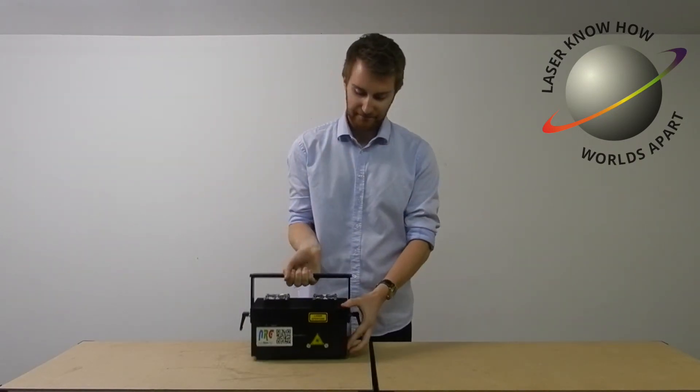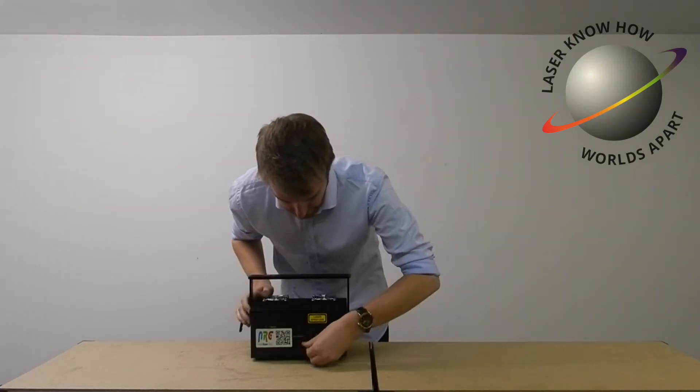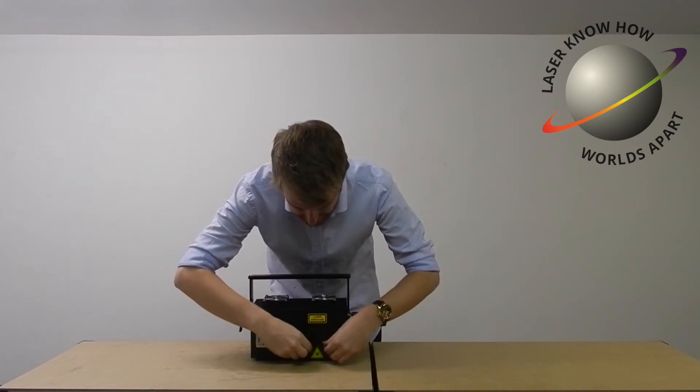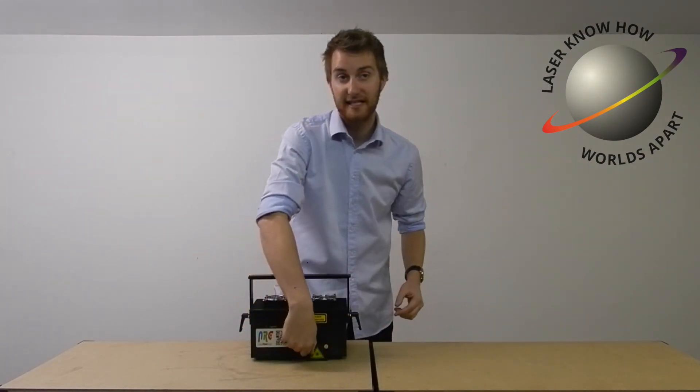So just spinning it around to the front, you've got your laser aperture protector down the front, and these lasers have 30k scan speed.